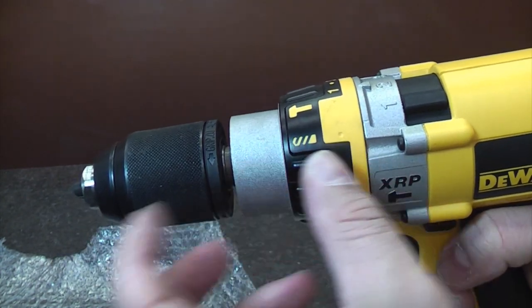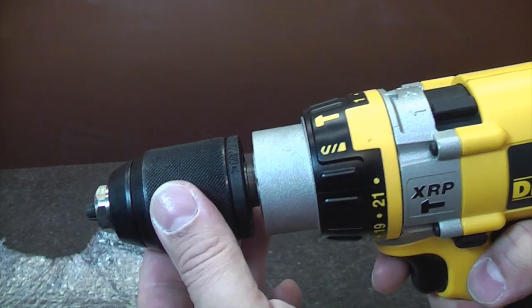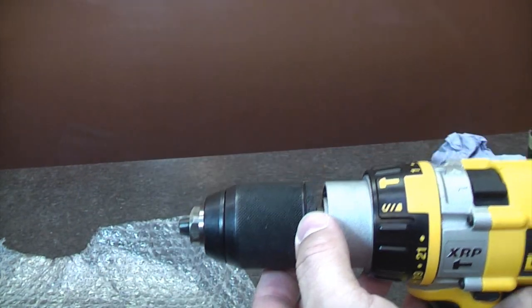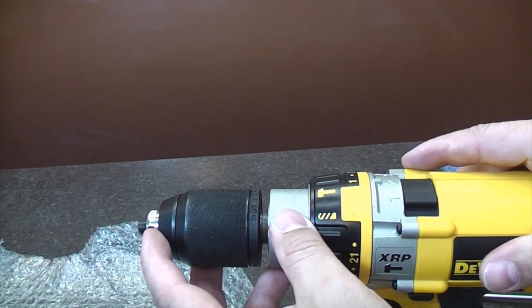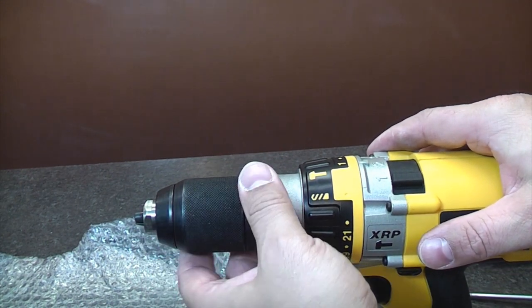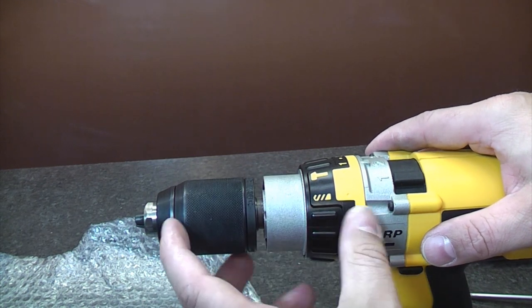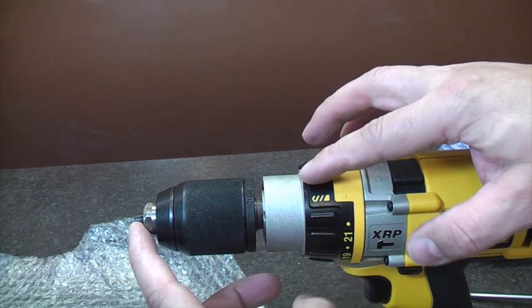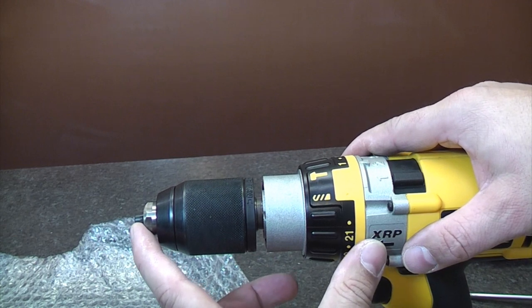So we're just going to replace that bit, and it's actually got the chuck already on it, which makes it easier. If you need to replace the chuck, it's very easy. I have done a video on how to get a chuck off and how to replace a chuck. So we're just going to replace the actual clutch and torque mechanism here, and it is very simple.